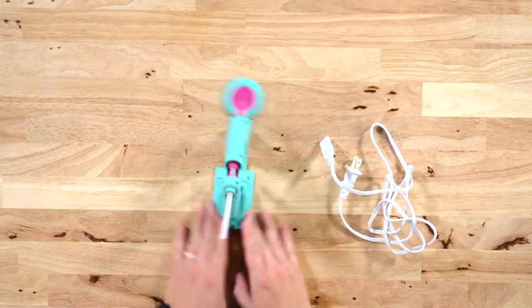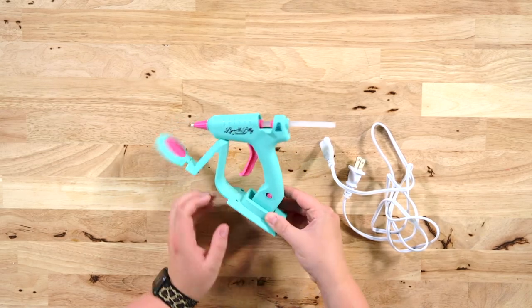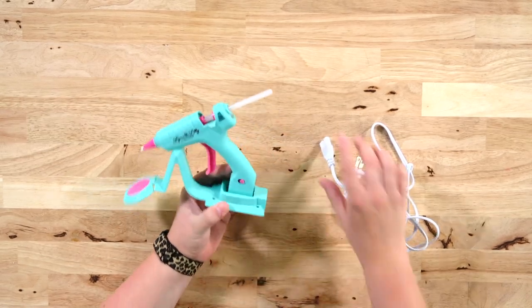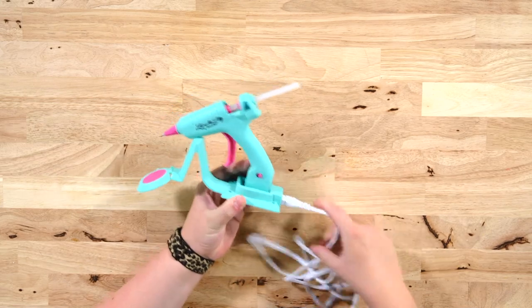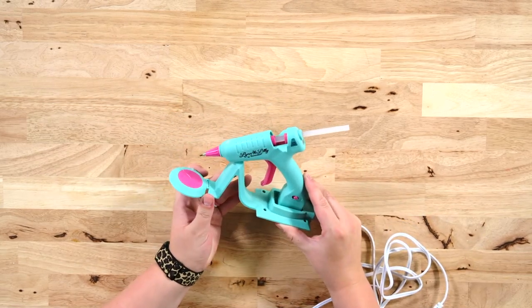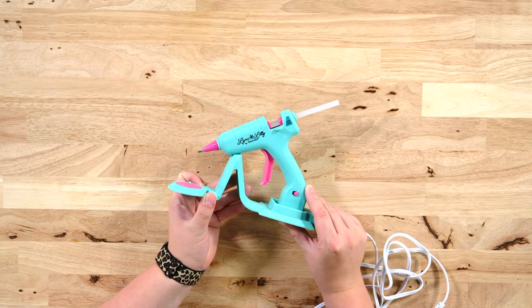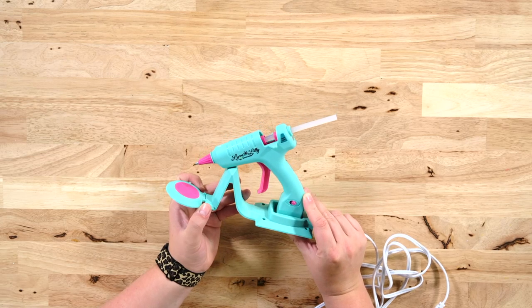So it sets on this little stand here. And it is a cordless glue gun. So the cord sits in the base just like this. And it will give you two full minutes of work time before it needs to be placed back on the base to charge up.